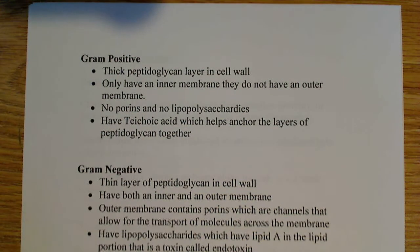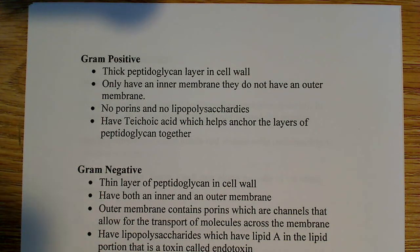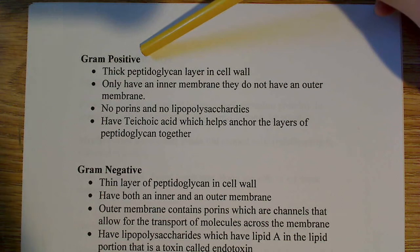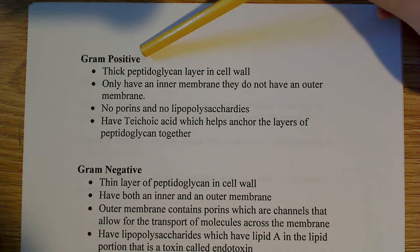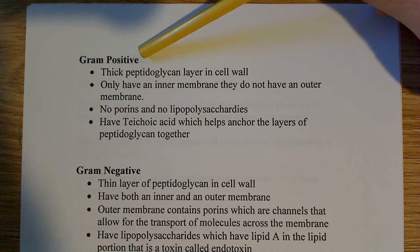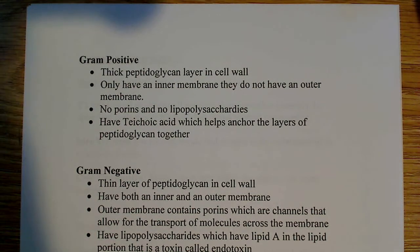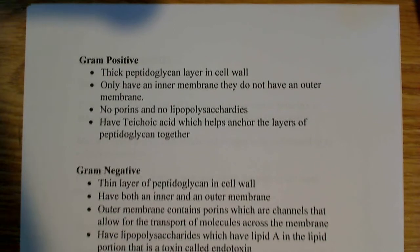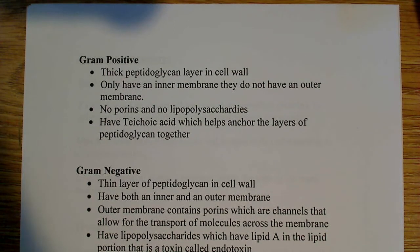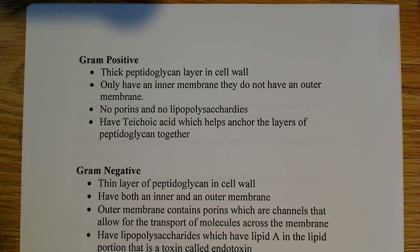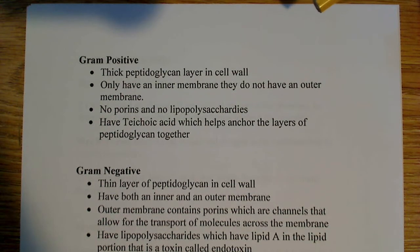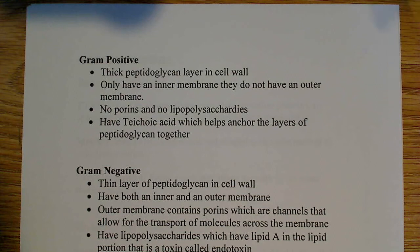What I want to talk about here is gram-positive and gram-negative bacteria. The gram part refers to a specific staining procedure in the laboratory, which involves crystal violet, iodine, ethanol, and saffron. It's a differential stain, meaning it allows you to differentiate between two different types of bacteria, and it's usually one of the fundamental first steps to determine what an unknown bacteria is.